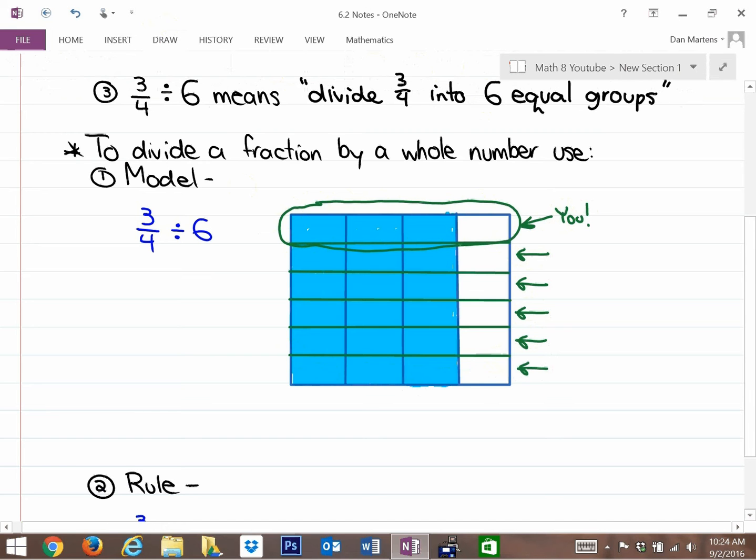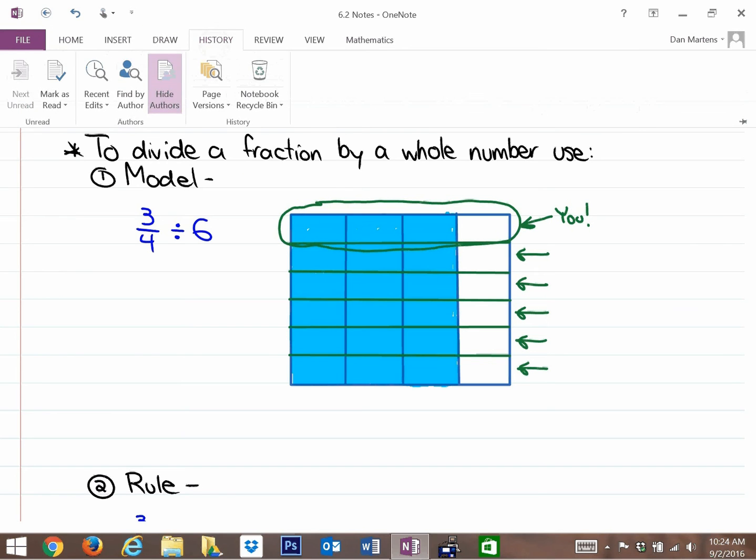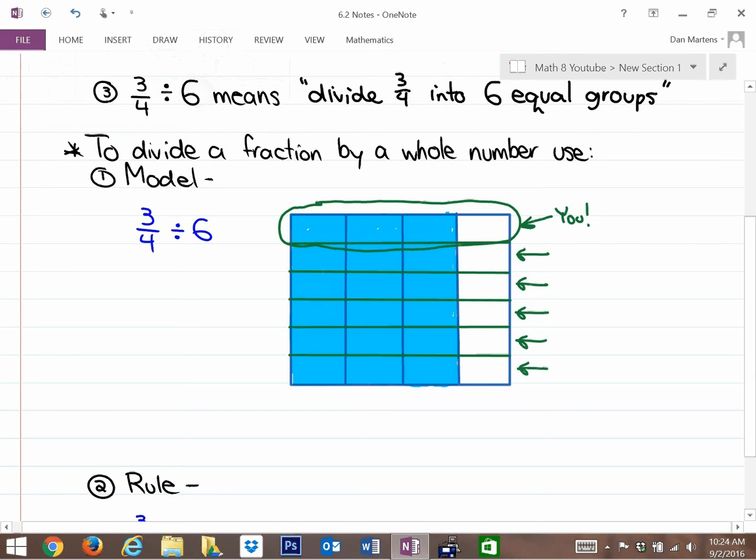If I divide 3/4 of a cake into six parts, you get this much cake. The shaded parts show you would get three pieces. I know there's four pieces in that row, but one is empty, so you get a total of three pieces.